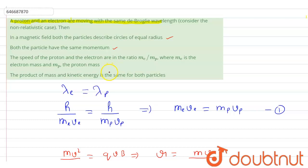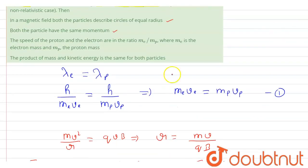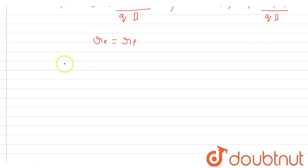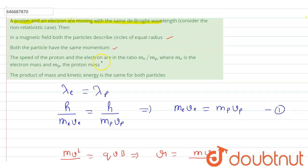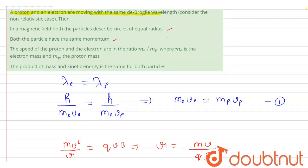Talking about the third option: it says the speed of the proton and the electron are in the ratio m_e / m_p, where m_e is the mass of the electron and m_p is the mass of the proton. Rearranging Equation 1 — m_e·v_e = m_p·v_p — we get m_e / m_p = v_p / v_e. So the ratio of velocity of proton to velocity of electron equals mass of electron to mass of proton, which is exactly what Option 3 states. So Option 3 is also correct.